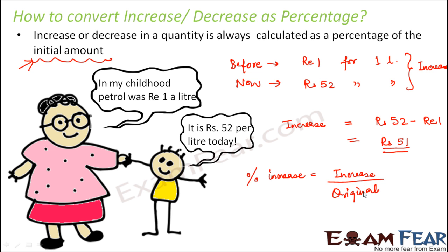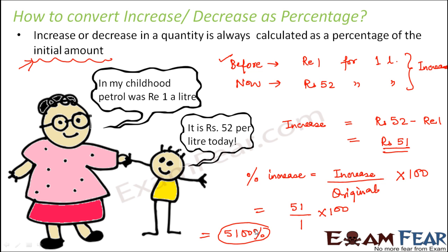So the initial amount here is the original or before amount. The increase is 51, and the original amount was 1, so percentage increase = (51 / 1) × 100 = 5100 percent. This shows that the price of petrol increased by 5100 percent — a huge increase! In this fashion, whenever you want to find the increase or decrease of a quantity, you can represent it in terms of percentage.